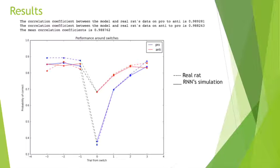In this figure, the dashed lines represent real rat data and the solid lines represent RNN's simulation result. Blue represents pro rule and red represents anti rule.